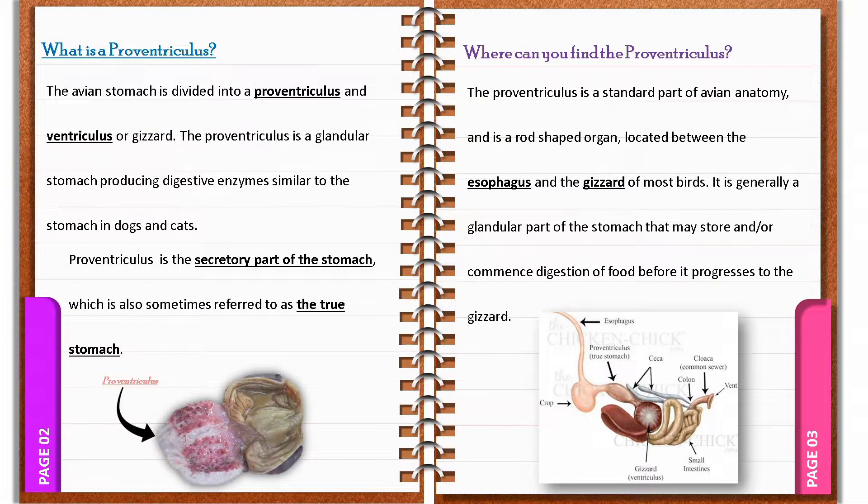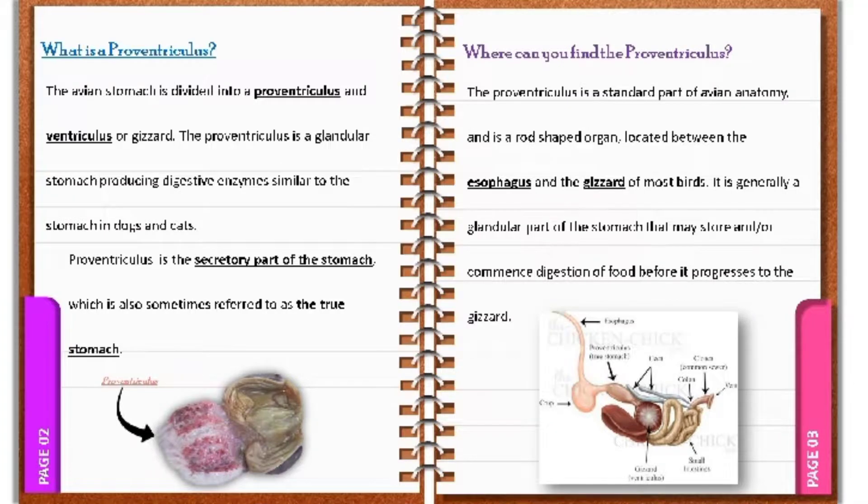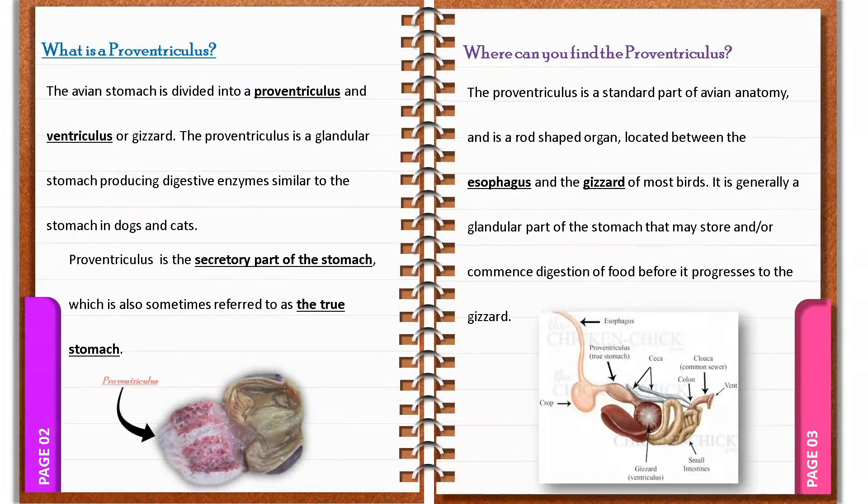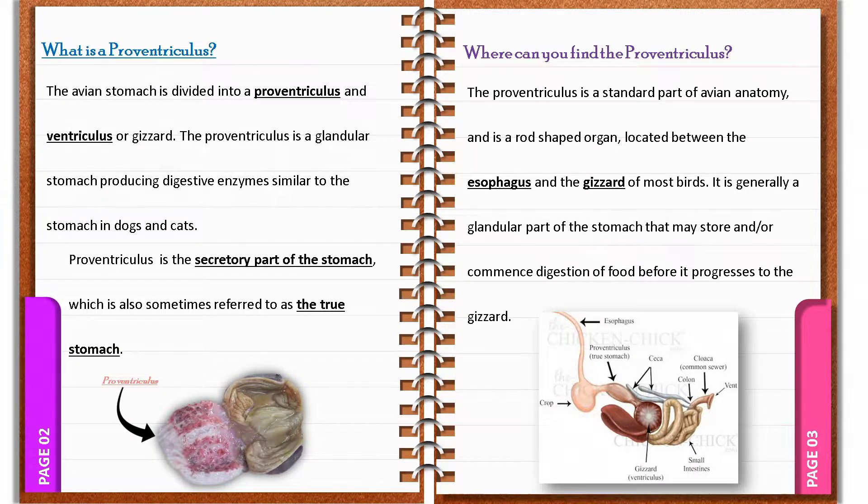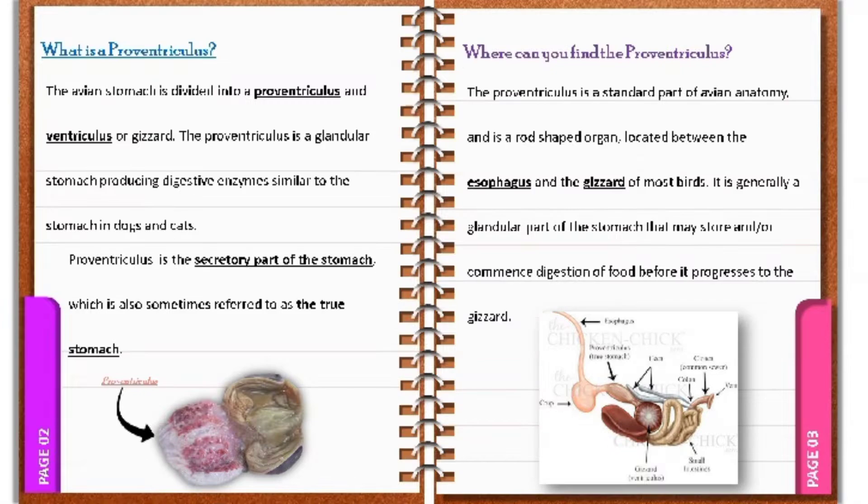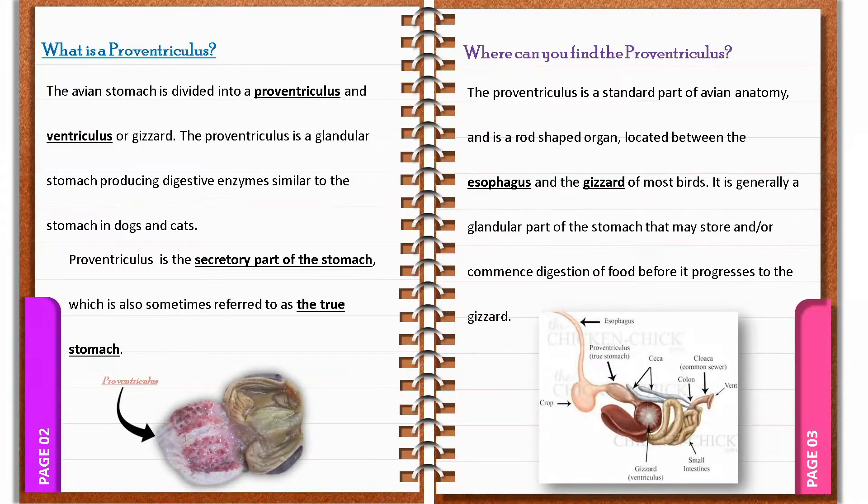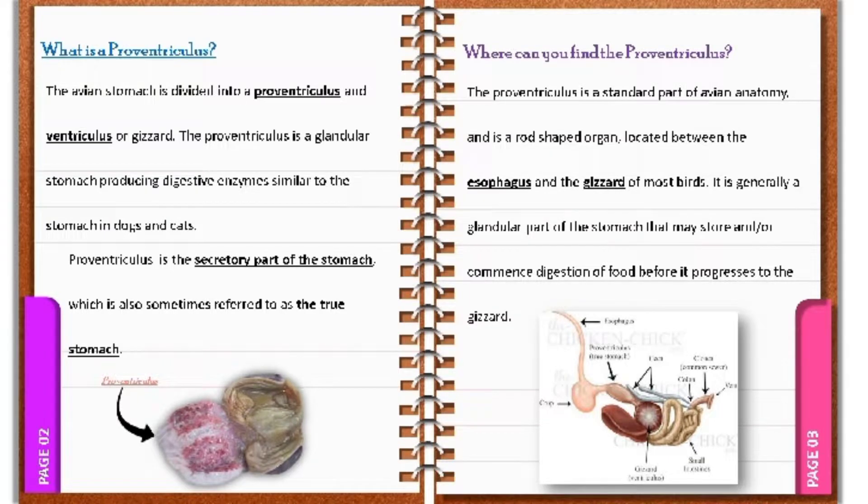So, what is a Proventriculus and where can we find it? The stomach of the avian species is divided into a Proventriculus and Ventriculus or Gizzard. The Proventriculus is a glandular stomach producing digestive enzymes similar to the stomach of cats and dogs. Proventriculus is the secretory part of the stomach which is also sometimes referred to as the true stomach.